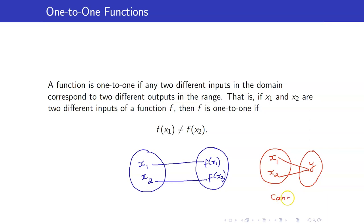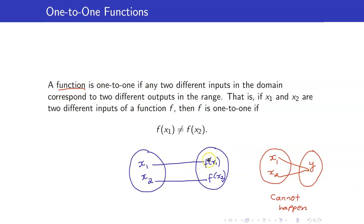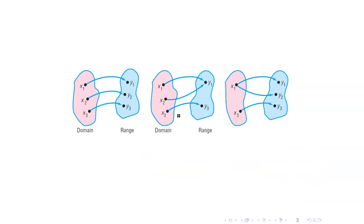This configuration cannot happen for one-to-one functions. Of course, this configuration can happen if you have a function, but if you want it to be one-to-one, this cannot happen — this is the only possibility. So for example, let us determine whether the following are one-to-one.